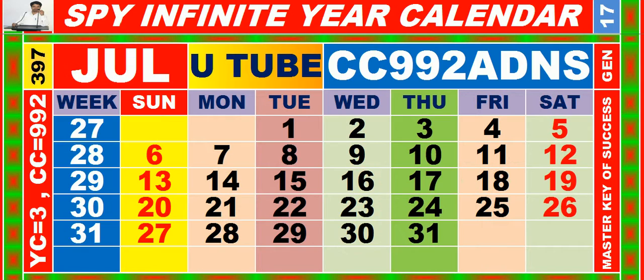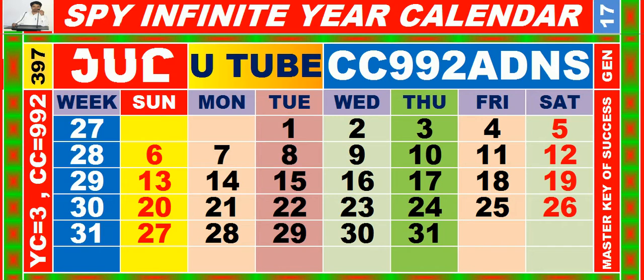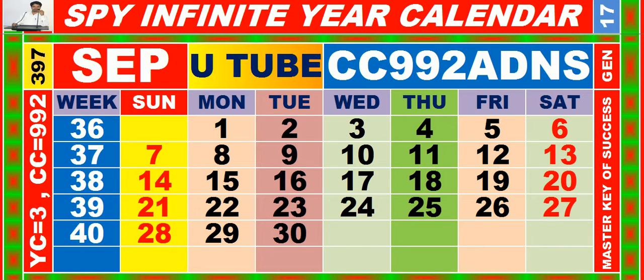Calendar for the month of July, having calendar code equal to 9-9-2. Calendar for the month of August, having calendar code equal to 9-9-2. Calendar for the month of September, having calendar code equal to 9-9-2.